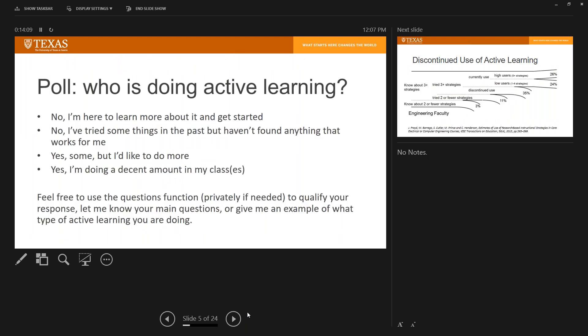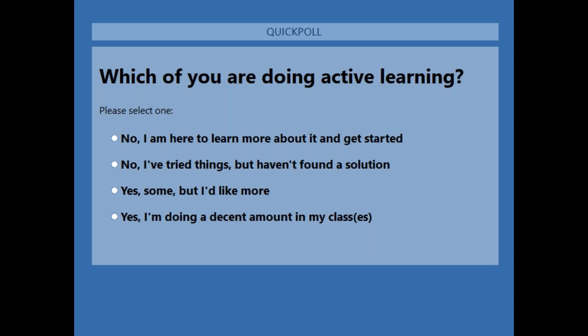I would like to get a sense of the group here today. I want to use the poll function on this program. At this point you should be able to see it on your webinar interface. Click on the poll and everybody answer. If you want to tell us a little bit more about what kinds of active learning you think you're doing, or want to tell me a little bit more about your answer, then we can use the question panel for that.